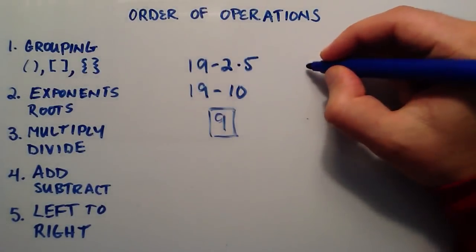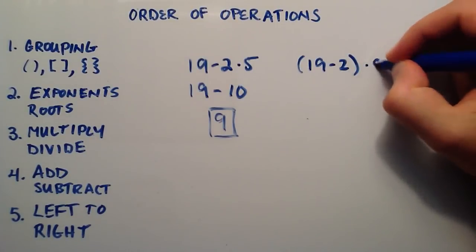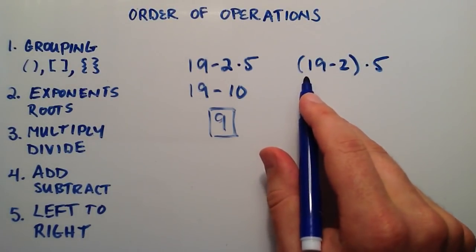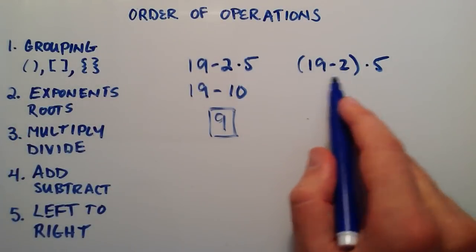So what if we had some sort of grouping mechanism in here? What if we had 19 minus 2, and then that result multiplied by 5? Well, then we would approach this a little bit different, since we do the grouping first. So everything inside the grouping,